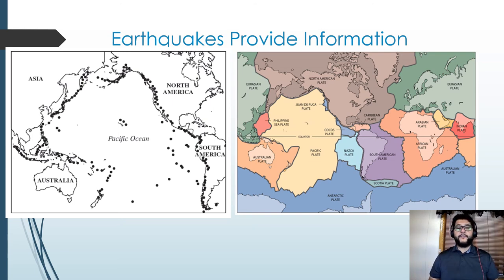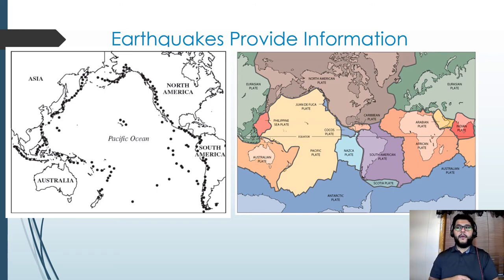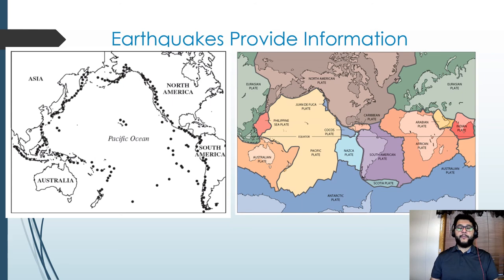Earthquakes provide a ton of information for us. All those little dots on the left diagram represent earthquakes or volcanoes that have occurred, and that's how we know where plate boundaries are. You can use that data to draw a map like the one on the right side and see where the plates are, how they interact with each other, and how they're moving.